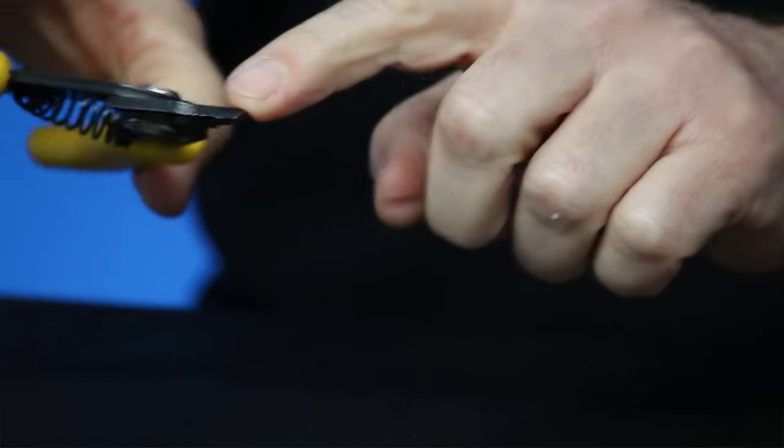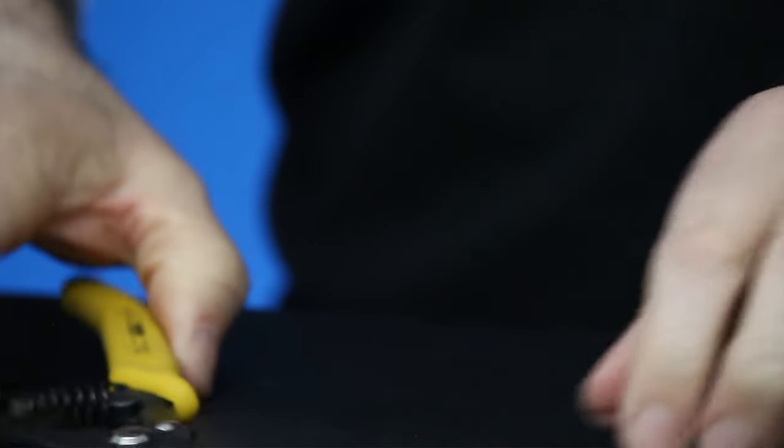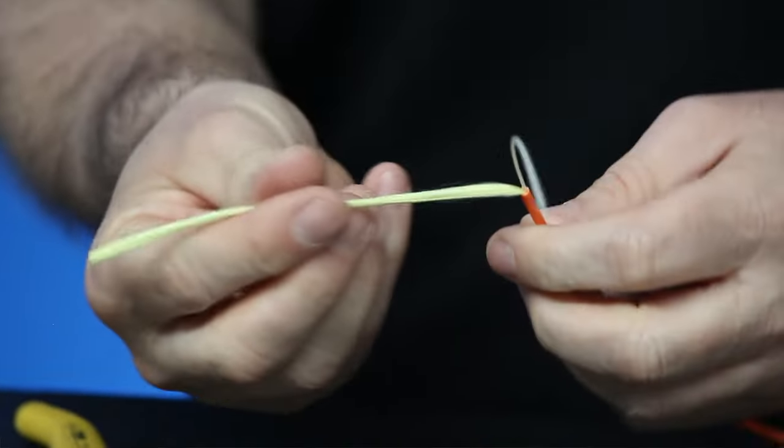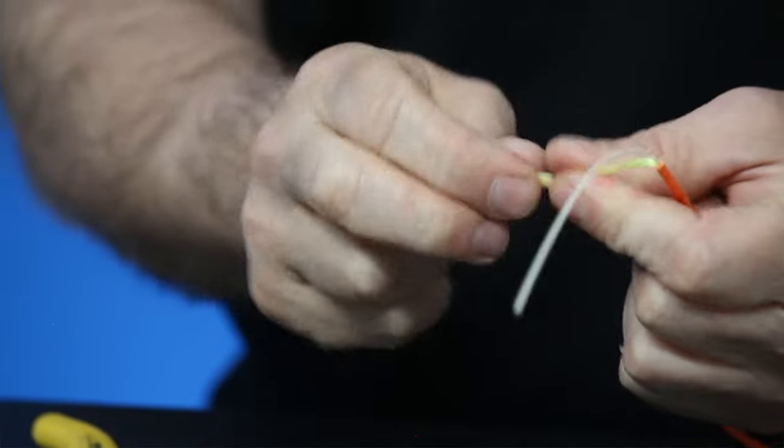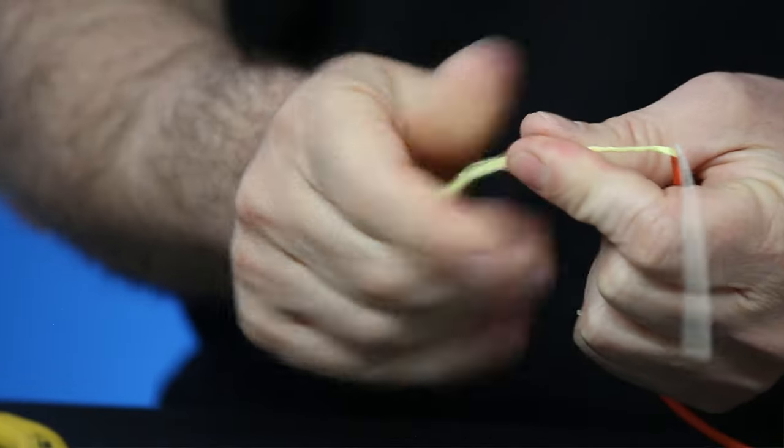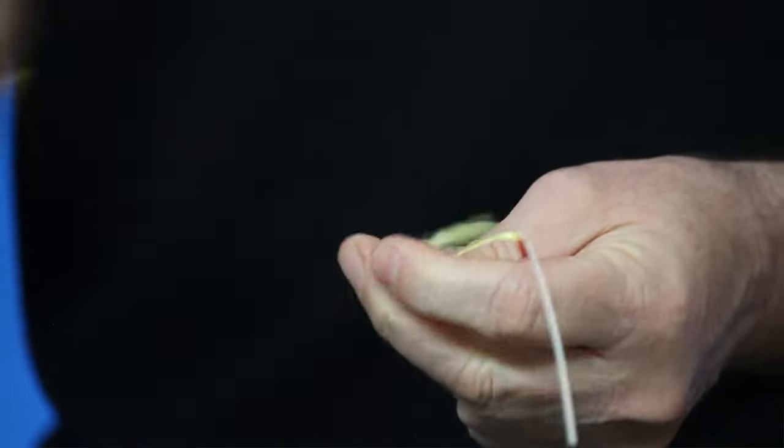Now this is good for two or three millimeter jacketed cable. So then you see you have your strength member here and you have your 900 micron tight buffer. I'm just going to cut out my Kevlar strength member just to get it out of our way.